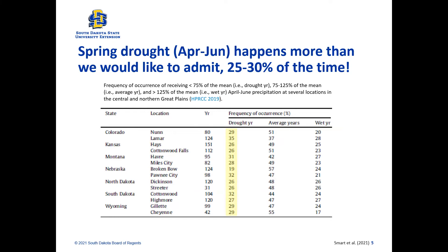The interesting fact is that spring drought happens more than we'd probably like to admit — it occurs anywhere between 25 to 30 percent of the time. I've got a list of states and different locations with long-term data sets. If you use the definition of drought as less than 75 percent of the mean precipitation for that period, we actually find that in a lot of these locations it's between 20, 25, and 30 percent, with a few exceptions. So drought is actually quite prominent in the Northern Great Plains.